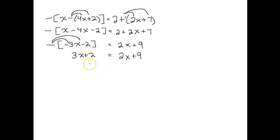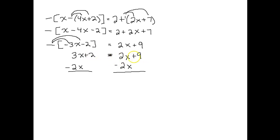Next, we want to get the x's on one side and the non-x's on the other. We have 3x on the left and 2x on the right. Since it's a positive 2x, we do the opposite and subtract 2x from both sides — because of the equal sign, you've got to keep things balanced and treat both sides the same. Then, to get x by itself, the plus 2 needs to go, so subtract 2 from both sides.